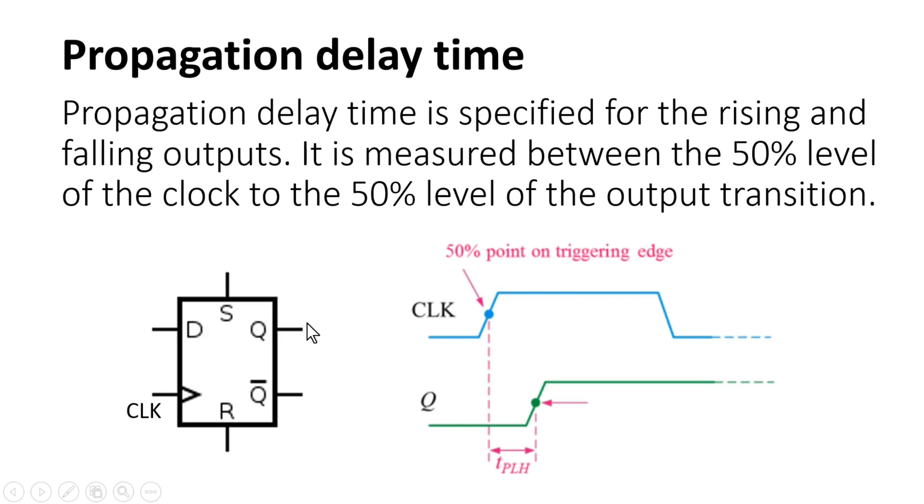And that is the reason why we take propagation delay from clock to Q and not from D to Q. I hope that would have answered your question.